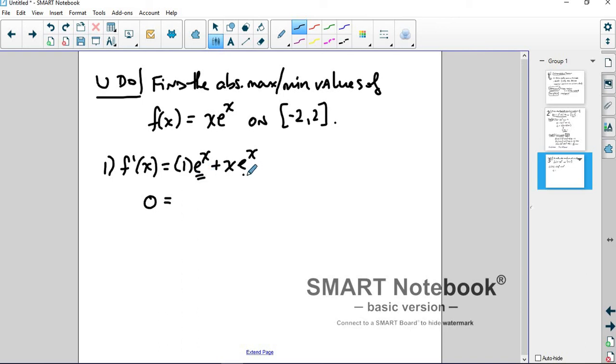There's a common factor of e^x, so pull it out, and you get 1 + x here. Remember that e^x is never 0, so that's not going to give us any critical values at all. 1 + x is equal to 0 when x is equal to -1. So your only critical number is -1.